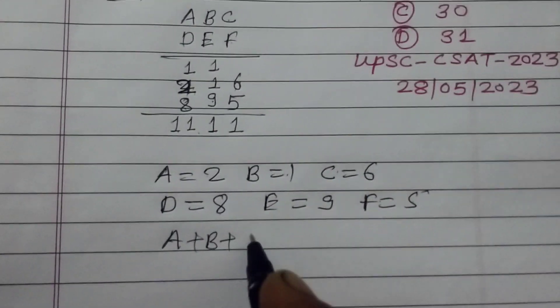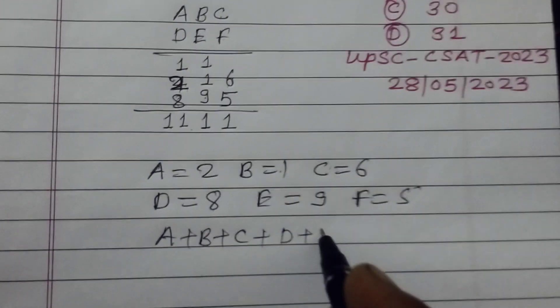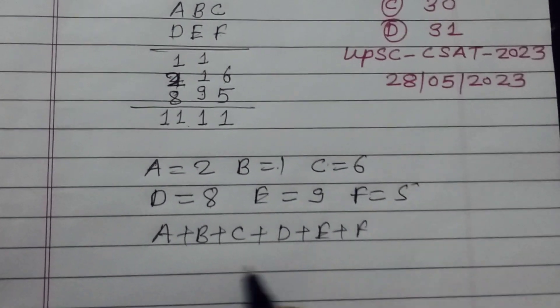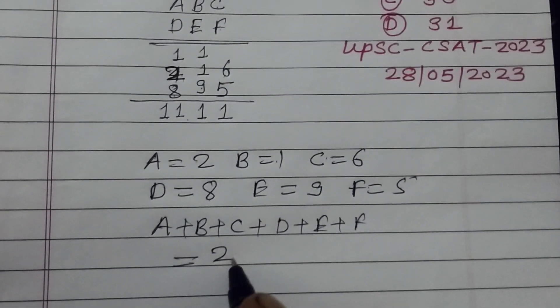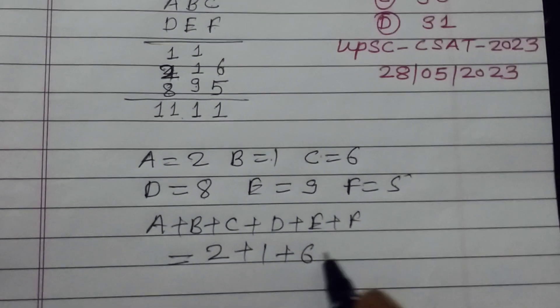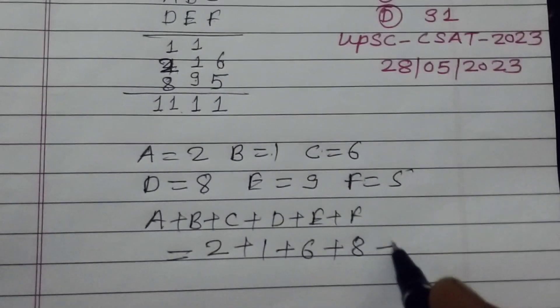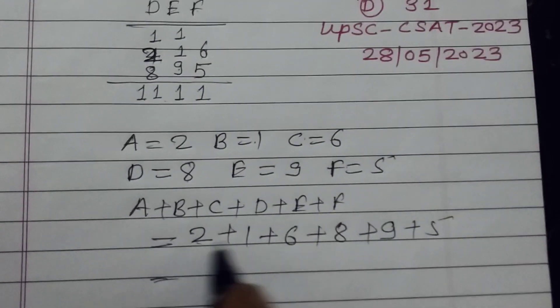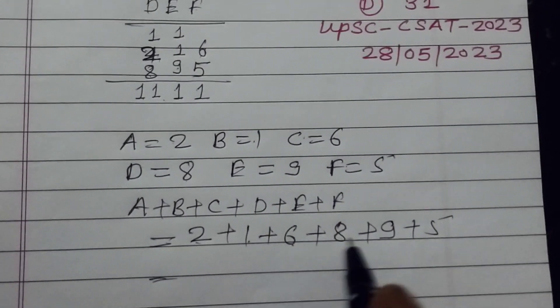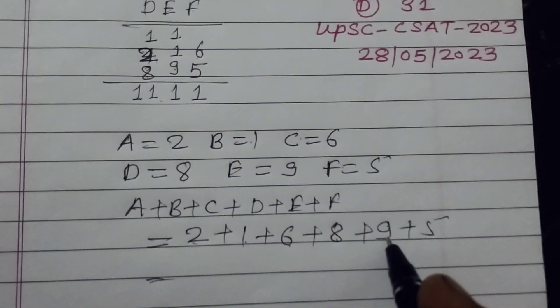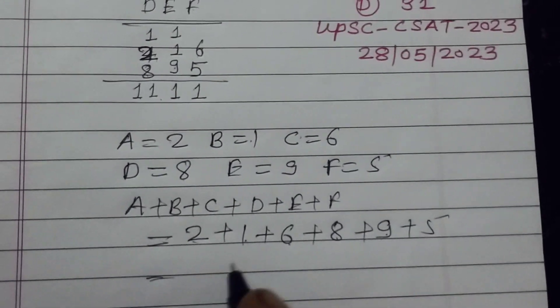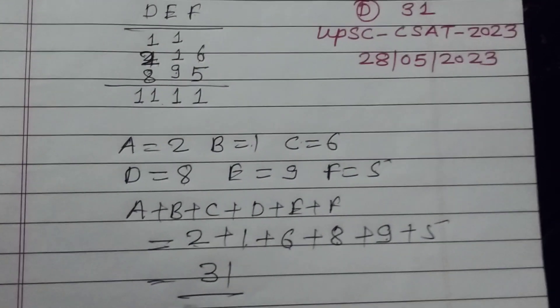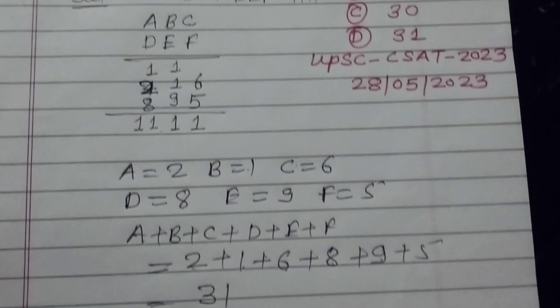A plus B plus C plus D plus E plus F now equals: A is 2, B is 1, C is 6, D is 8, E is 9, and F is 5. So 2, 1, 3. 3, 6, 9. 9, 8, 17. 17, 9, 26. 26 plus 5, 31. So 31 is the sum of the digits.